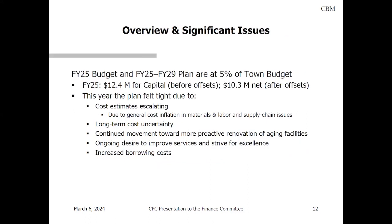This year we're looking at $12.4 million for capital before offsets, and $10.3 million net after offsets from other sources such as enterprise funds. For the last several years the capital plan has felt tight — there's more worth doing than we can pay for, largely due to inflation in materials and labor. Capital projects tend to be more expensive every time you turn around; even some projects where we thought we had enough money came in over bid. There's a lot of long-term cost uncertainty — for example, how much will a fire engine cost in five years? We make a reasonable guess for inflation and adjust as we go.